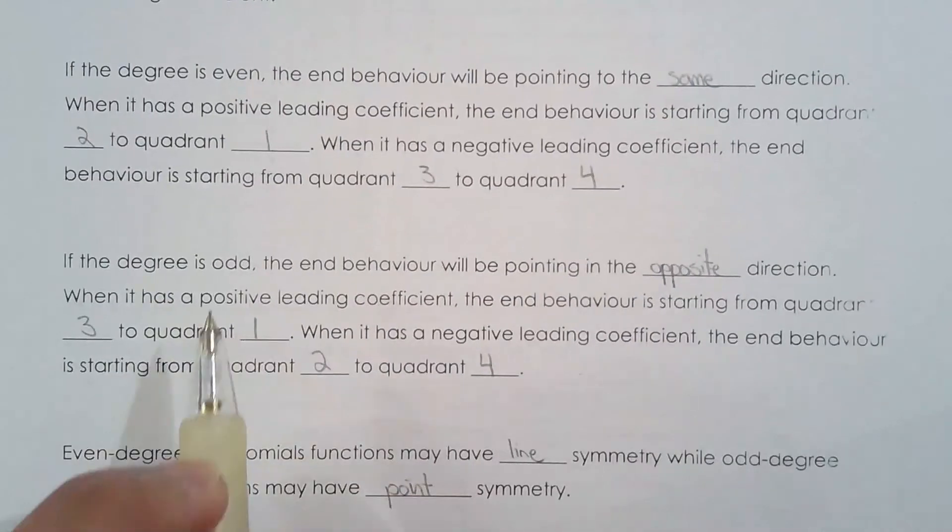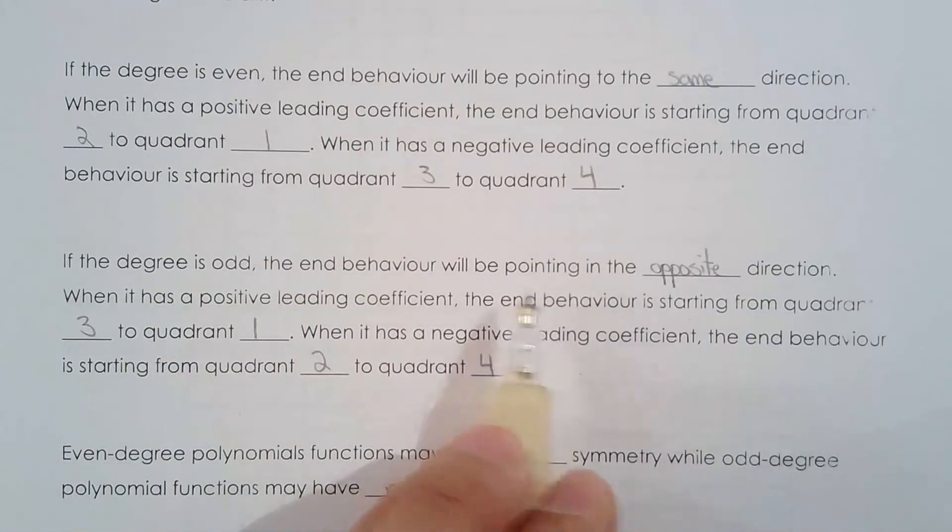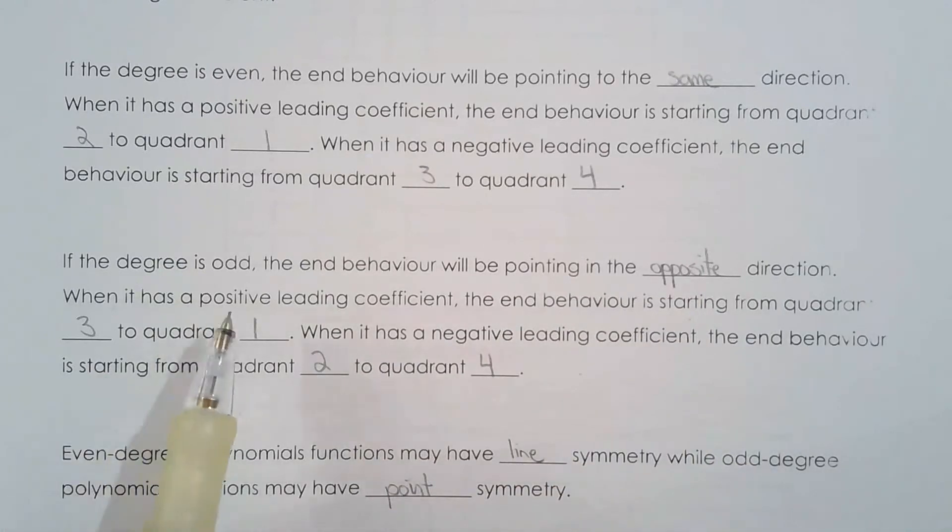If the degree is odd the end behavior will be pointing in opposite directions and with a positive leading coefficient it's 3 to 1, negative leading coefficient 2 to 4.